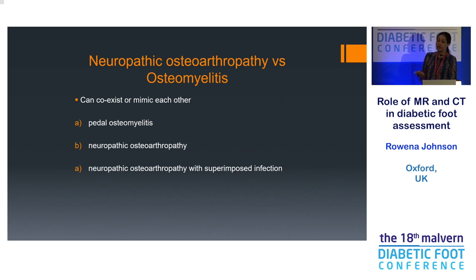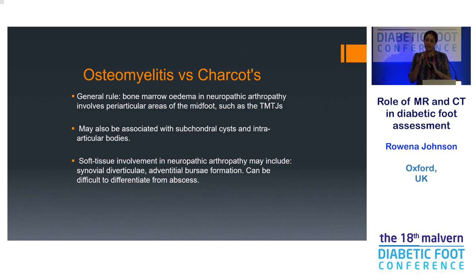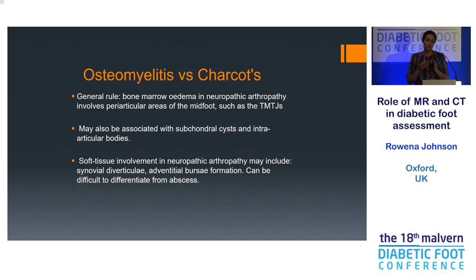Differentiating neuropathic osteoarthropathy from osteomyelitis is often tricky — they can definitely coexist and mimic each other. As a general rule, the oedema in a neuropathic foot is subarticular or subcortical and seen across several bones. Whereas with osteomyelitis, it tends to involve more of the bone and is not subarticular. The distribution is usually different: we see more MRI changes in a neuropathic foot in the midfoot, whereas with infection the changes tend to be where there is mechanical pressure — the hindfoot or the forefoot.